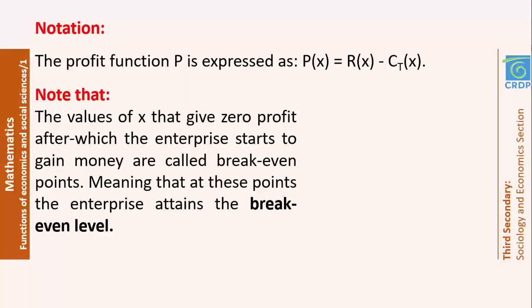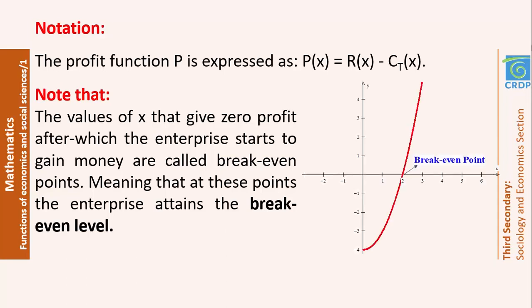The values of x that give zero profit — after which the enterprise starts to gain money, having recovered all production costs — are called break-even points. When the question asks when the enterprise attains the break-even level, you must find points where P(x) equals 0. Graphically, the break-even point is where the graph of P(x) meets the x-axis.